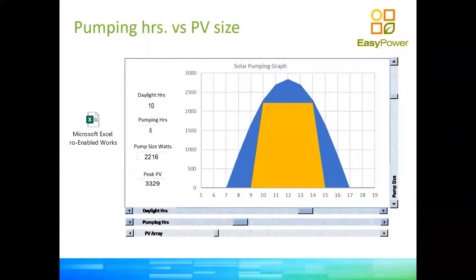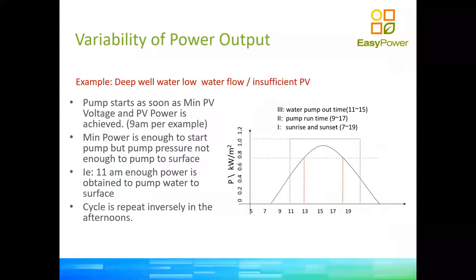Your pump inverter will behave better in summer — pumping for longer hours at maximum speed and producing more water — and conversely produce less water in winter. If you have a mission-critical application needing the same amount of water winter and summer, your design must be based on winter conditions so it performs well in winter and excellently in summer. The way to handle this is to over-panel the system, giving more hours of pumping in winter, and obviously much more water in summer.